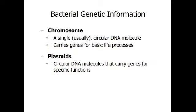Bacteria carry genetic information in two structures: the chromosome and plasmids. The chromosome, a circular DNA molecule, carries genes for the cell's basic life processes. A bacterial chromosome is organized more efficiently than a eukaryotic chromosome in two ways. First, genes coding for proteins with related functions are often situated next to one another, allowing transcription of all the genes together. Second, almost all the DNA in a bacterial chromosome codes for proteins — unlike eukaryotes, bacteria don't spend time transcribing mRNA that won't be translated.